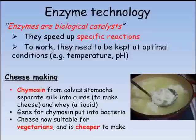To make cheese you need to separate the curds and whey in milk. Traditionally this was done using rennet extracted from the stomachs of calves killed for veal. Chymosin is the enzyme in rennet that does the job of separating the liquid and the solid. The gene for chymosin can be transferred into a bacteria, and this GM bacteria will then produce chymosin to make cheese suitable for vegetarians.